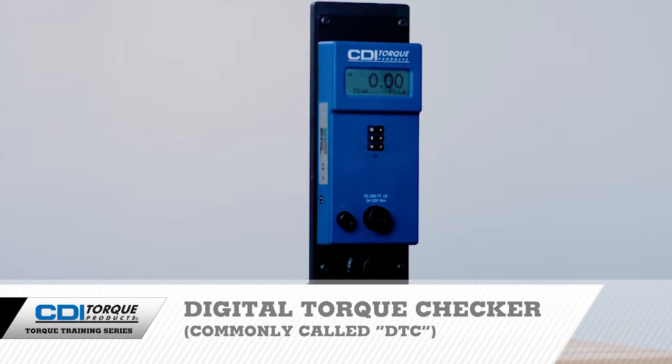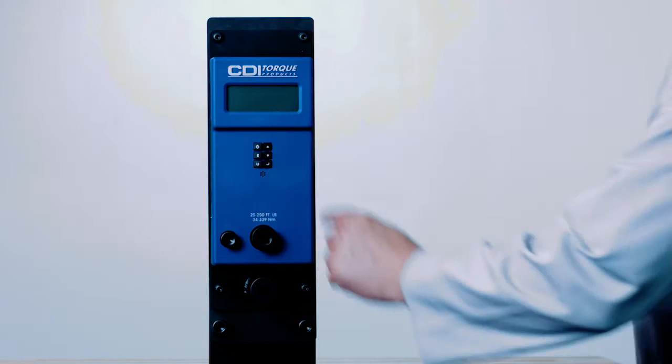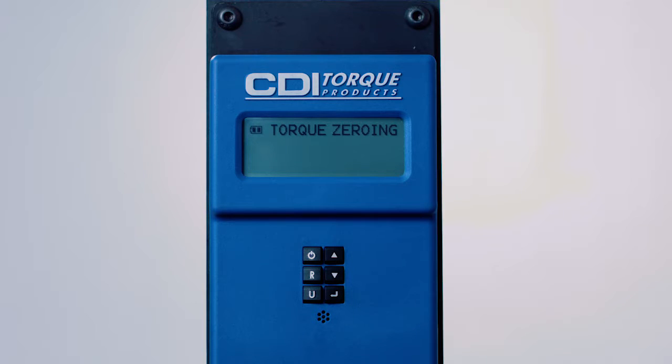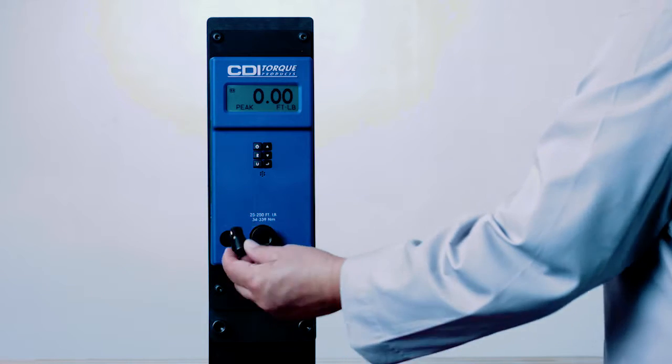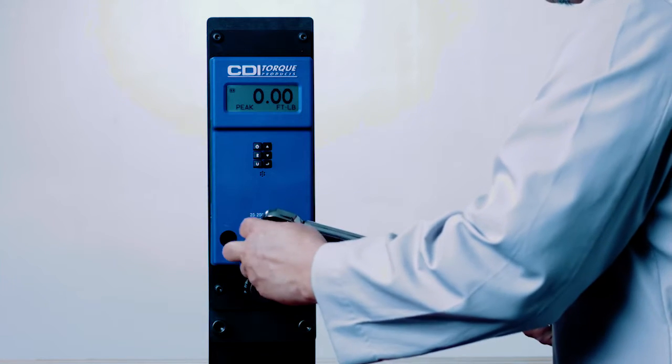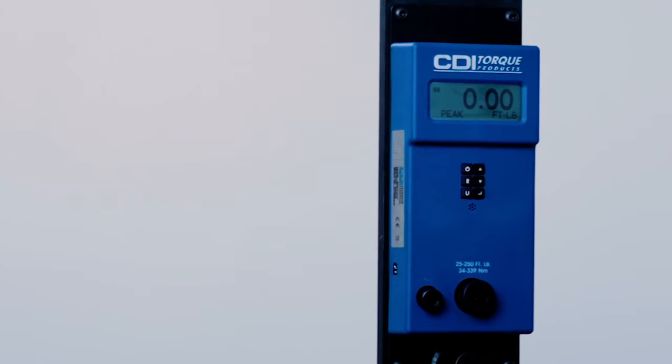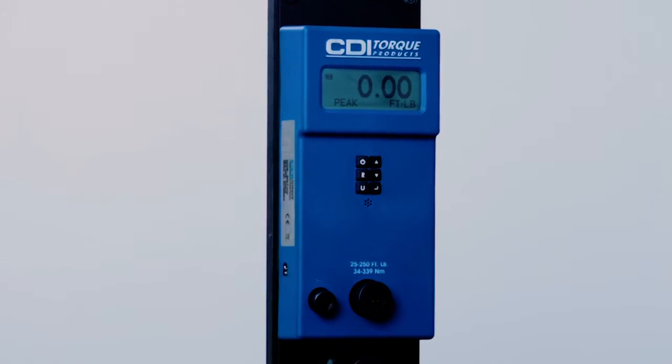Today's video covers the proper use of CDI's digital torque checker called DTC. The DTC is an easy to use digital torque checker that's perfect for periodically checking the accuracy of your click type torque wrenches and dial type torque wrenches. It can also be used for training in the proper use of click type torque wrenches.